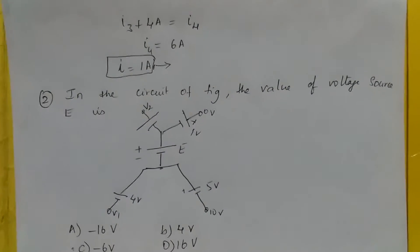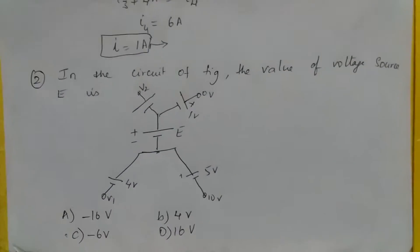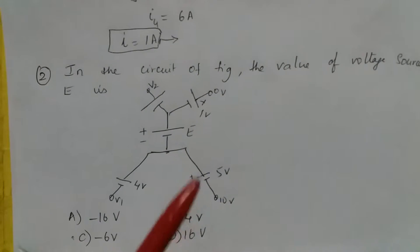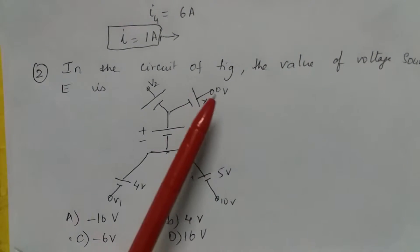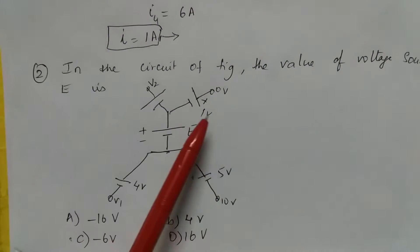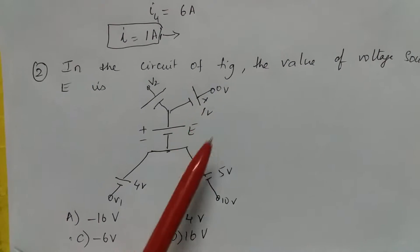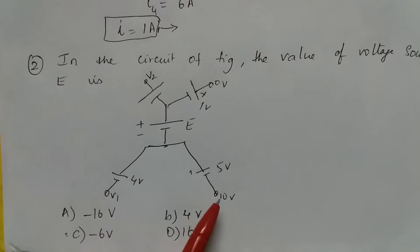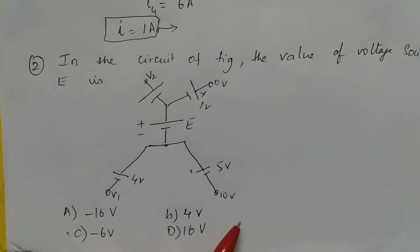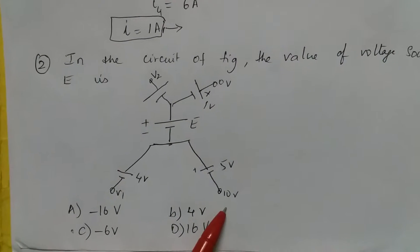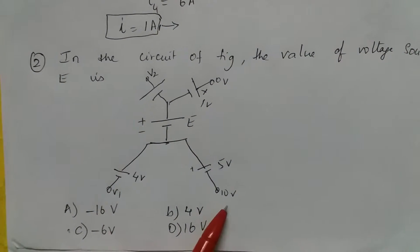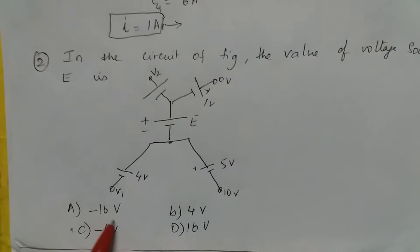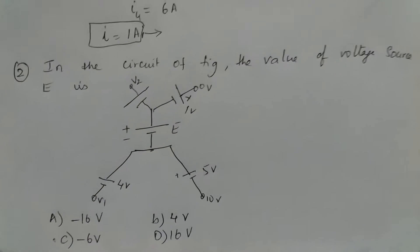In the circuit of the figure, the value of the voltage source is to be found. Starting from one point: 0 volts plus 1 volt plus E plus 5 volts plus 10 volts gives minus 16 volts.